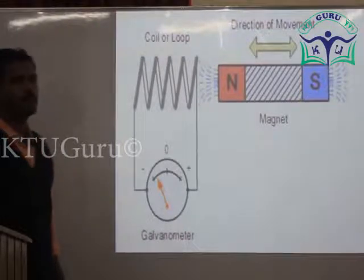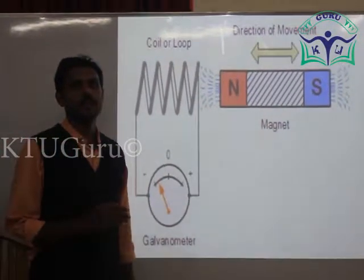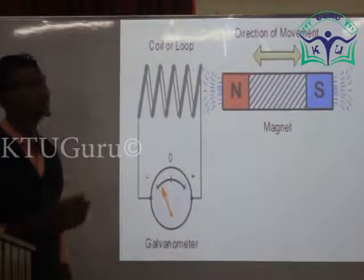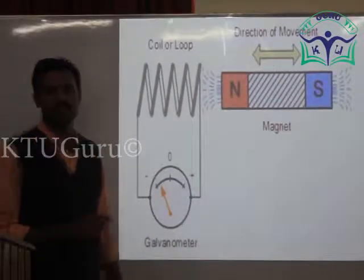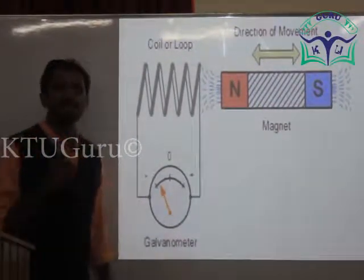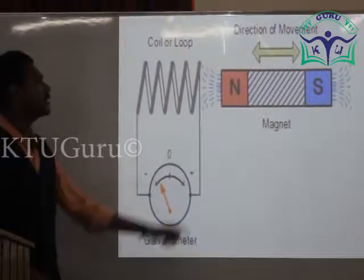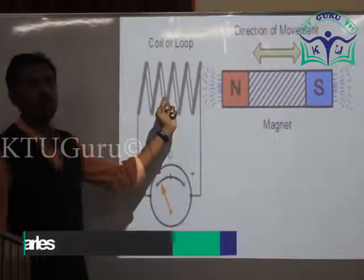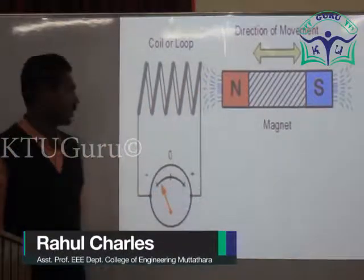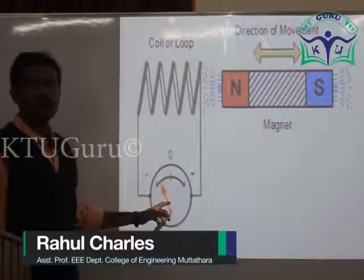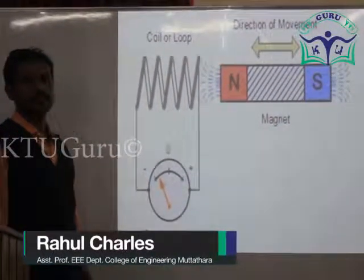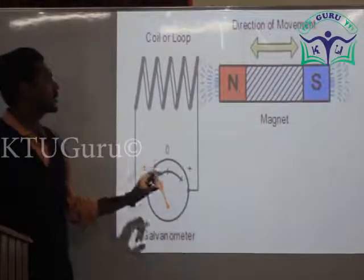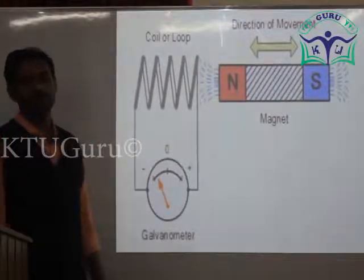The process by which an EMF is induced in the conductor whenever there is a change in magnetic flux linked with the coil is called electromagnetic induction. So whenever this magnet moves towards the coil or is taken away from the coil, this galvanometer shows a deflection — meaning it is used to detect the presence of current in this closed coil.